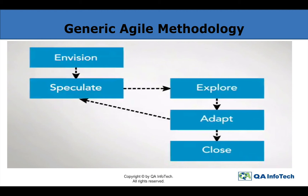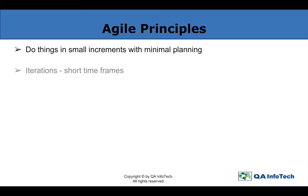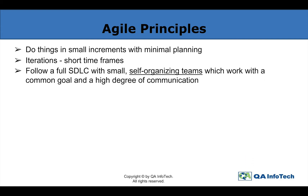Subsequently, we elaborate these requirements to different QA and DEV teams to work on. This whole process happens release-over-release repeatedly. Moving on to the basic aspects to keep under consideration, we have the elemental Agile principles, wherein one needs to do things in small increments with minimal planning. The iteration should have short timeframes — time boxes that should last up to just 2 to 4 weeks — and follow a full SDLC.